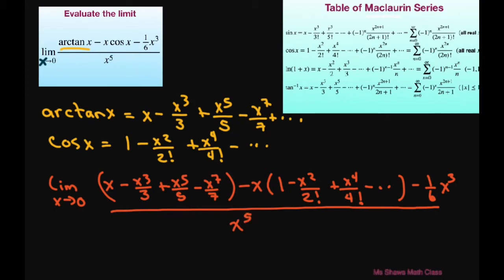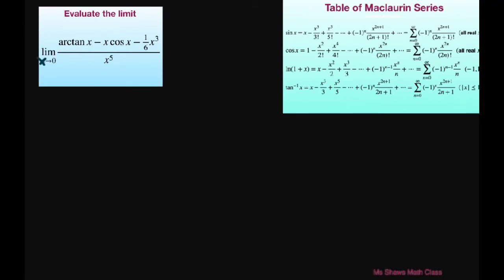Alright, so I'm going to go ahead and simplify the numerator. We're going to get the limit as x approaches 0 of x minus x cubed divided by 3 plus x to the power of 5 divided by 5 plus dot dot dot.